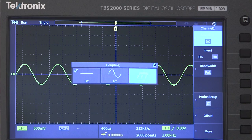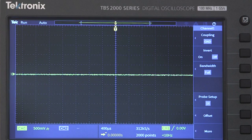Ground coupling disconnects the channel from the input signal and connects it to the zero volt reference to show the measurement ground level.